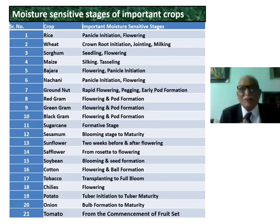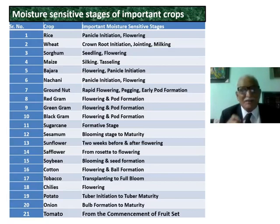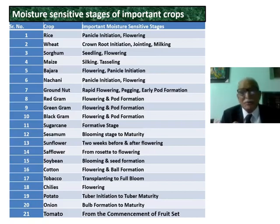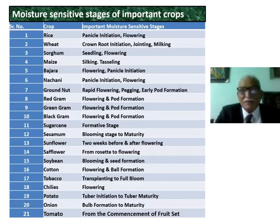For sugarcane, it is the formative stage. For sesame, it is blooming stage to maturity. For sunflower, it is two weeks before and after flowering. For soybean, it is rosette to flowering and seed formation. For cotton, it is flowering and boll formation. For tobacco, it is transplanting to full bloom. For chillies, it is flowering. For potato, it is tuber initiation to tuber maturity. For onion, it is bulb formation to maturity.